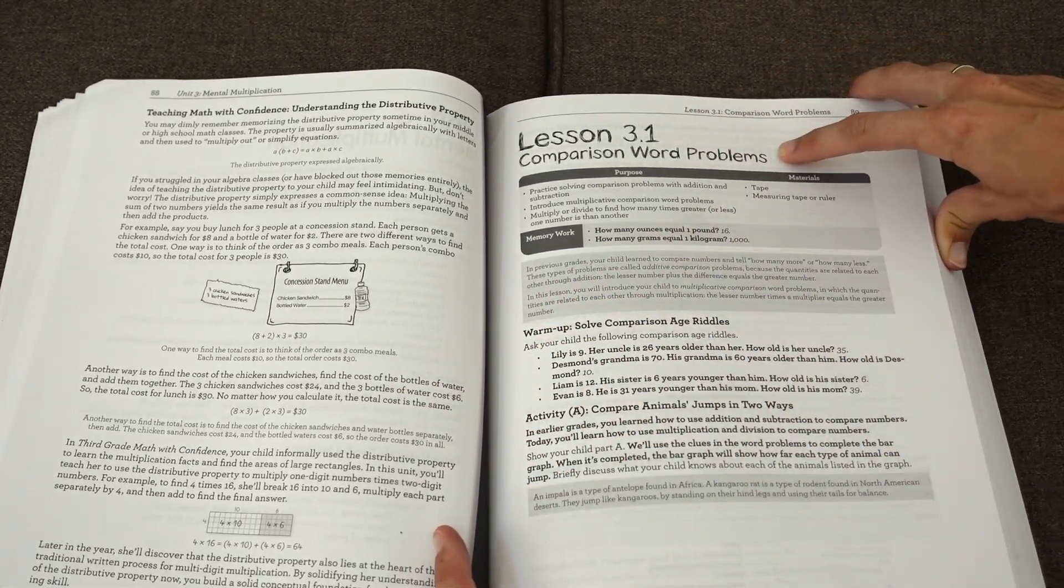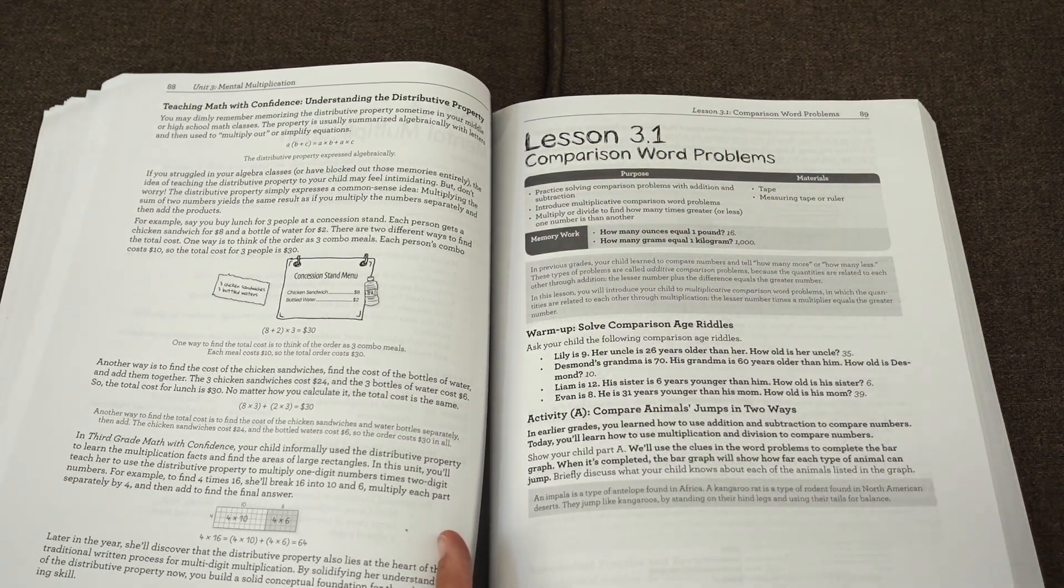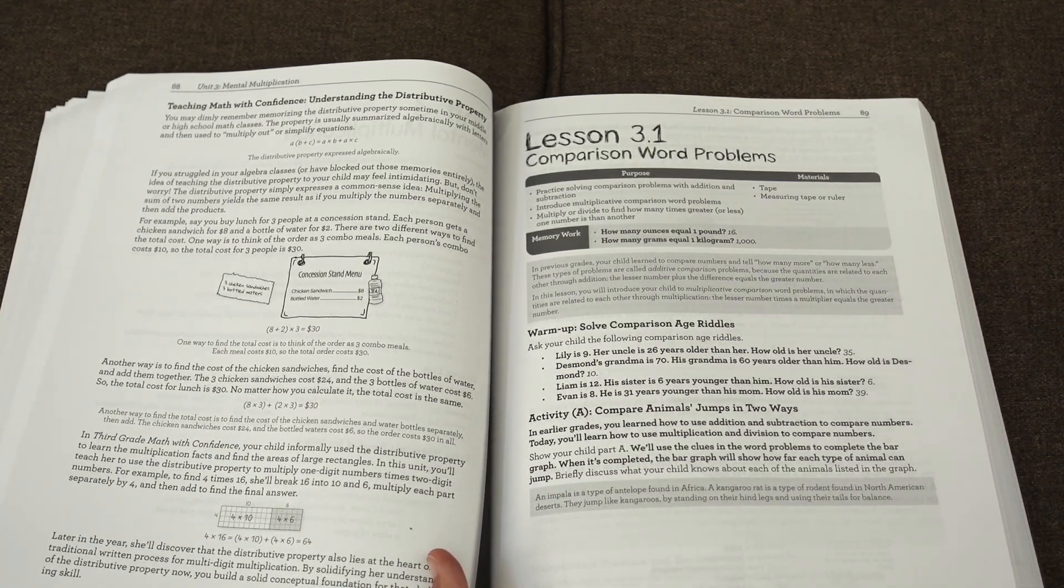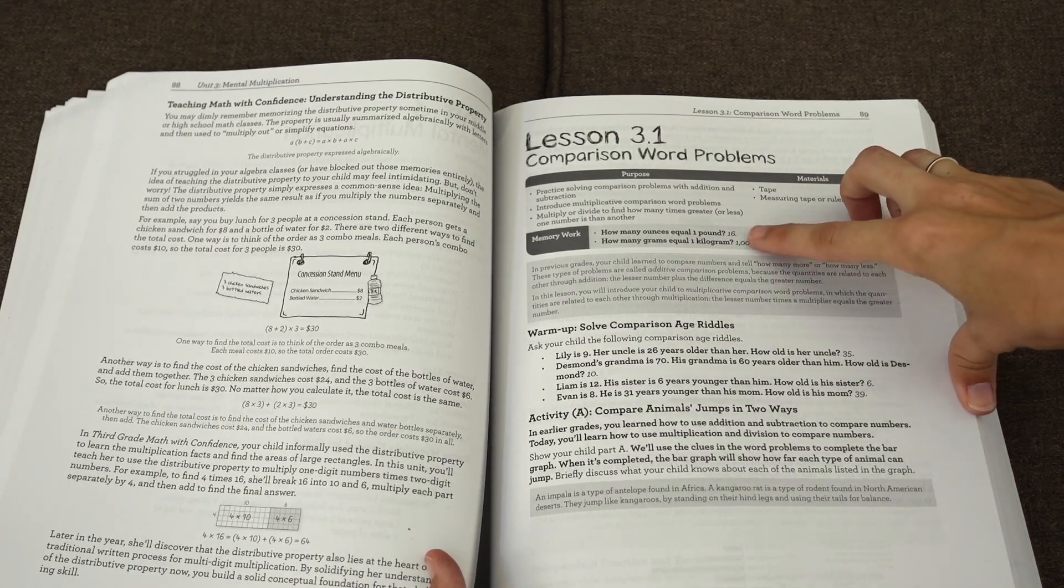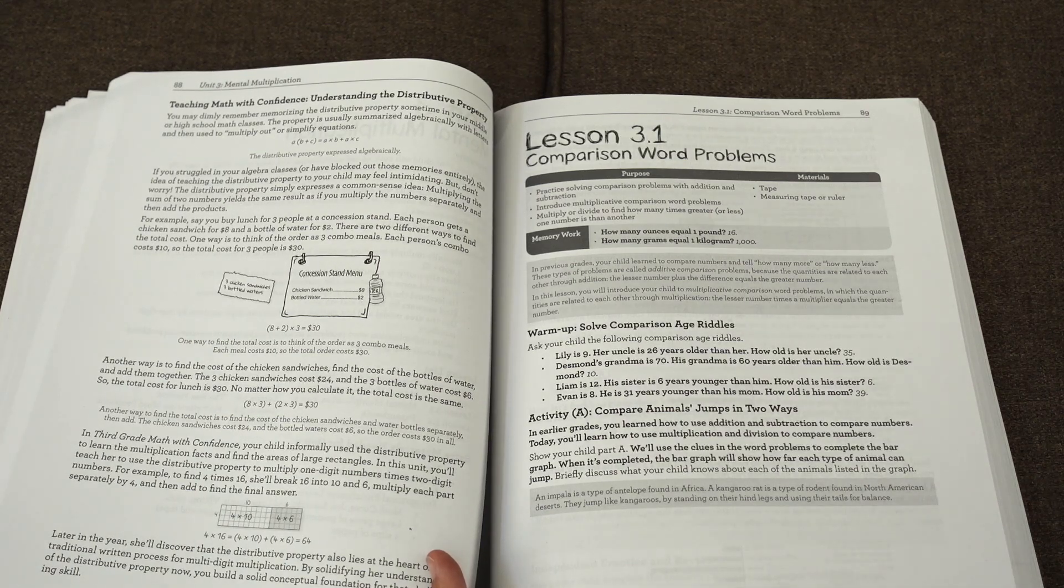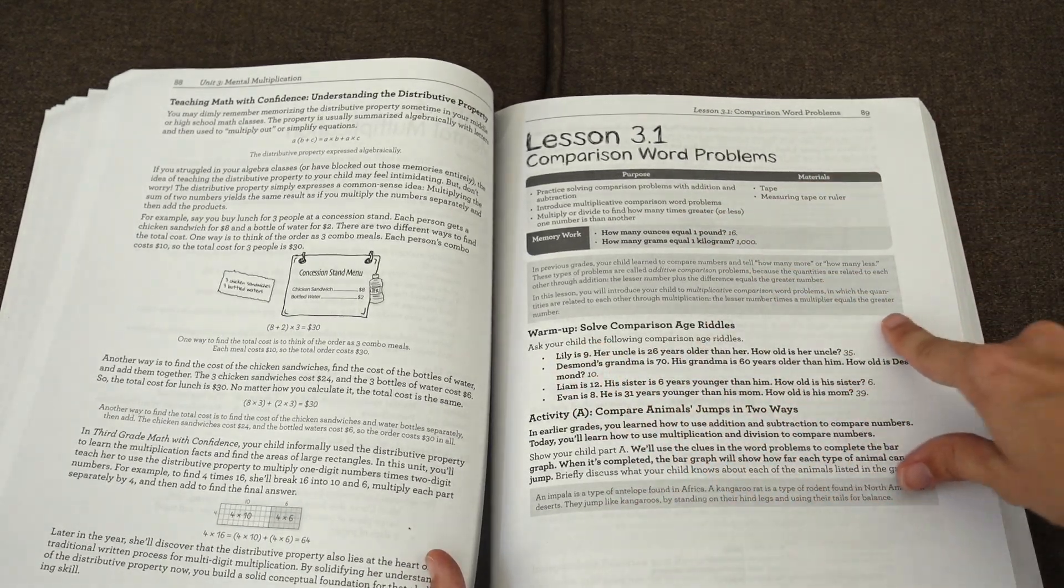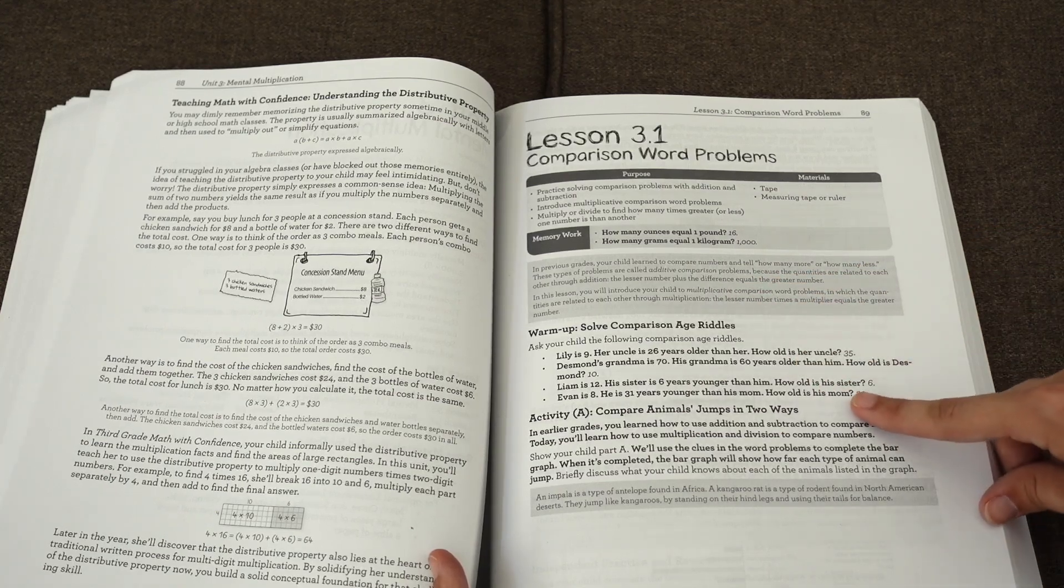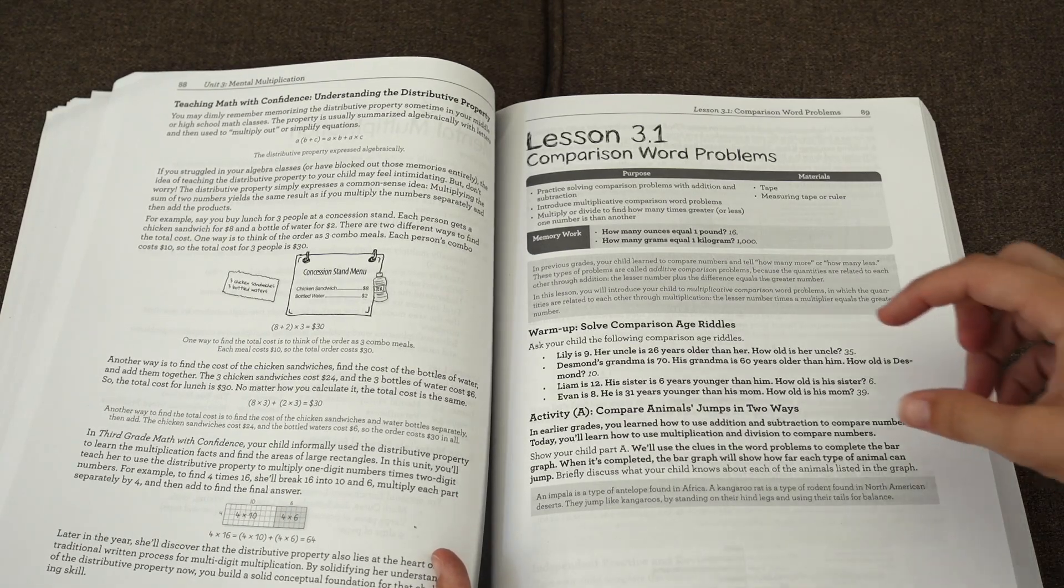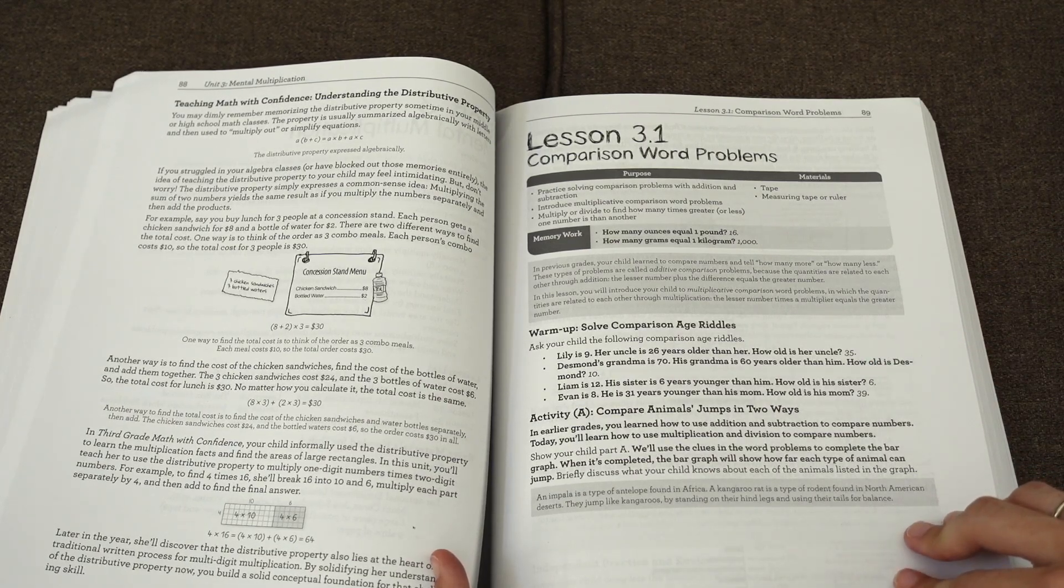But let's look at what a lesson looks like. So lesson 3.1, comparison word problems. Every lesson will start with memory work and these are just really quick. How many ounces equal one pound? This is something that your child has been introduced to in the past, but kids, they forget things that they've been introduced to. So I find it very useful to have this quick memory work. How many grams equal one kilogram? And just in a few seconds, just review some memory work from math. We always do this. Then there is a warm-up and sometimes these warm-ups are oral. Here, this is an oral warm-up. Actually, quite a few times they're oral. Sometimes it has you playing a game, reviewing a game that you've played before. There's variety in these warm-ups. But here we have just some quick oral riddles that your child can answer.